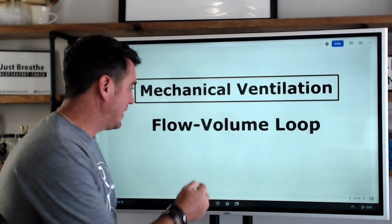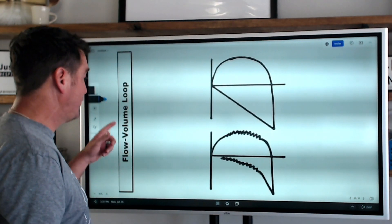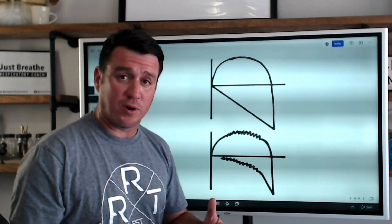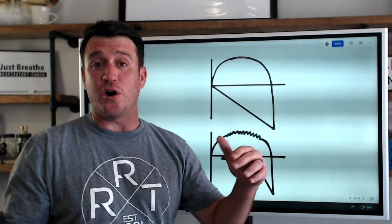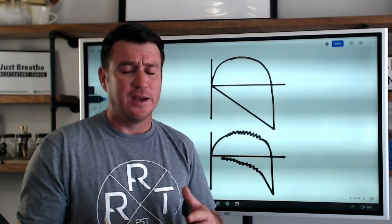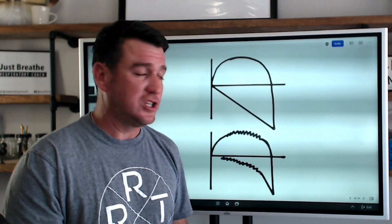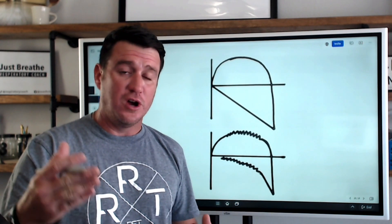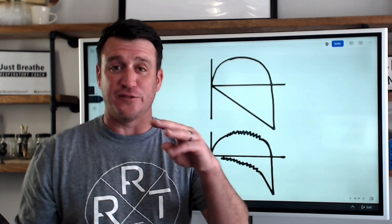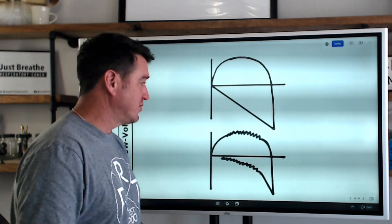We're talking all about the flow volume loop today. We're going to look at what the flow volume loop is. We've already talked about the flow waveform pattern and the volume waveform pattern — these are scalar graphics. The flow volume loop is an illustration of both of those waveforms just put on an XY axis. Go check out those other videos on flow, volume, and pressure. This is the fourth part of this series.